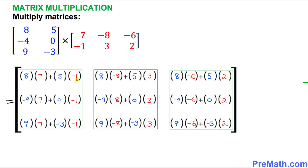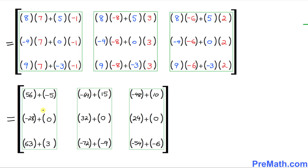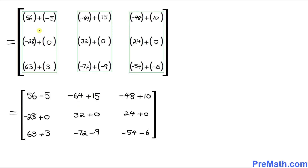In the next step, we are going to simplify by multiplying. 8 times 7 is 56, 5 times negative 1 is negative 5, 8 times negative 8 is negative 64, and so on. Here is our new matrix after multiplying: 56, negative 5, negative 64, and likewise 15, and so on. After removing the parentheses, we get this simplified matrix.